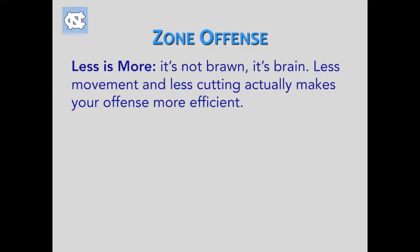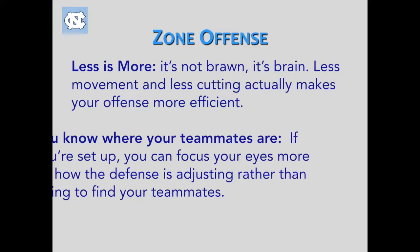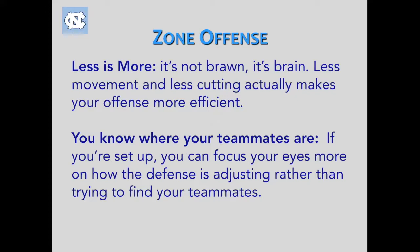Less is more. Zone offense is more about being smart than trying to power your way through it — less movement, less cutting. You do have to cut some, but the less you do, the more efficient your offense becomes. Why? Because you kind of know where your teammates are. Your guys can focus more on how the defense is adjusting rather than just trying to find teammates. A lot of teams have 14 different passes to get into a play, when it should be more about peeling and prying the zone apart so you can make a nice easy pass.